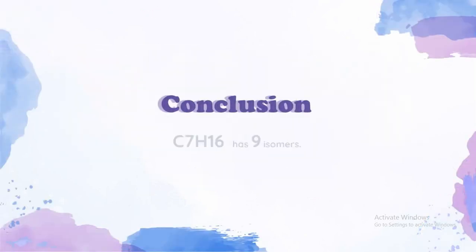So, in conclusion, there are 9 isomers of C7H16.